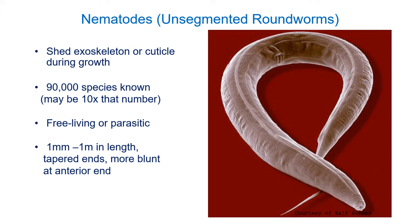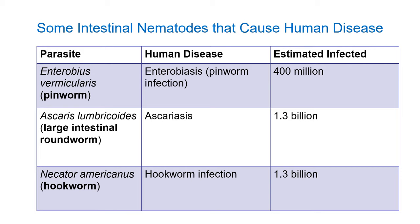Among the nematodes worth discussing, we have pinworms — tiny little worms found in Canada that don't cause serious damage but are more of an inconvenience. Then we have ascaris and hookworm, which are more problematic and infect a lot of people — these numbers are conservative. Ascaris and hookworm are found in many tropical and subtropical regions and both are soil-borne parasites, meaning you get them from the soil. If you're a vegan or vegetarian thinking you don't need to worry about worms because you don't eat meat, unfortunately these species have absolutely nothing to do with meat consumption.